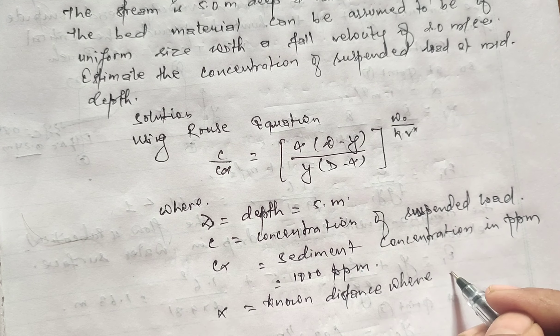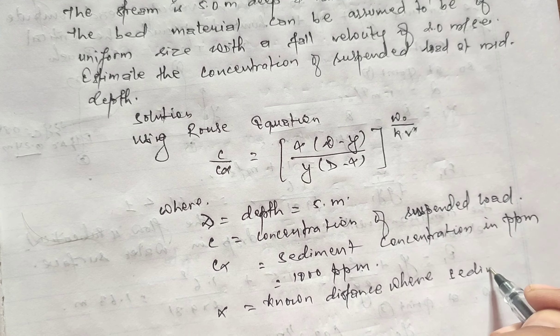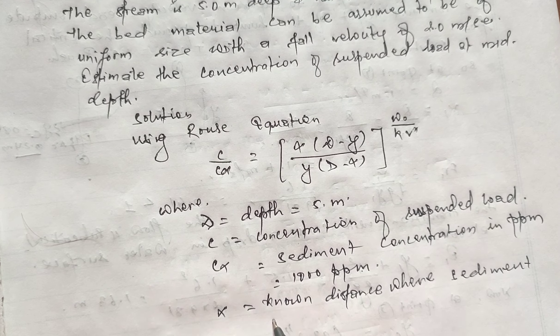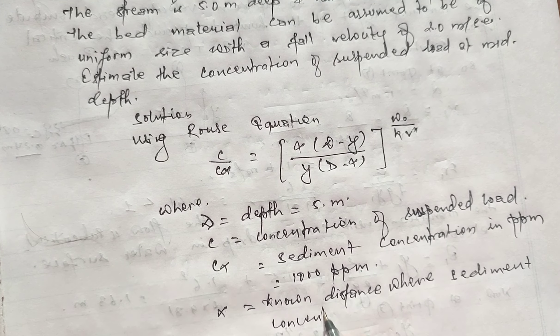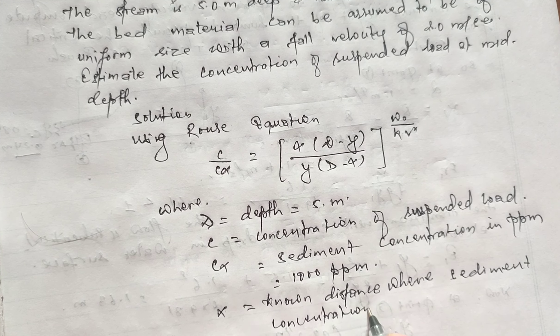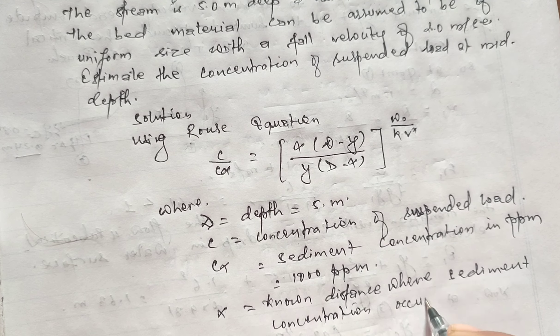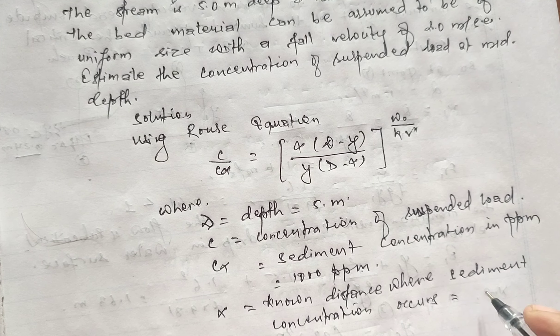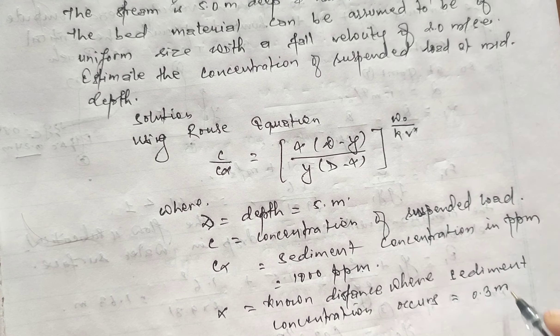α equals known distance where sediment concentration is measured, that is given as 0.3 meter in the question.